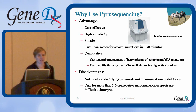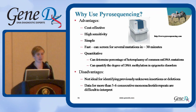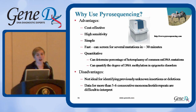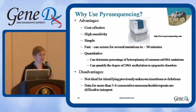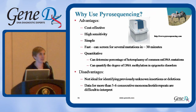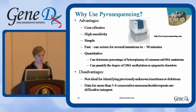Pyrosequencing is cost-effective and very fast. It is typically used not for sequencing entire genes but to screen for multiple common mutations associated with a genetic disorder in a single assay. Screening can be done in about 30 minutes. It's highly sensitive, relatively easy to use, and the main advantage is that it's quantitative. This makes it a great technology for detecting common mitochondrial DNA mutations because it gives you information about the percentage of heteroplasmy, which you can't get from other technologies like sequencing or restriction digest.